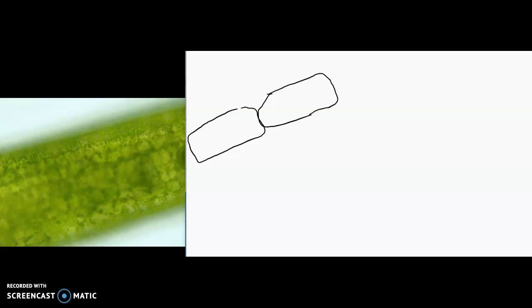And what we're seeing there inside each of these cells, so this would be the cell wall, are some little green objects and I bet you can guess what the green objects are.